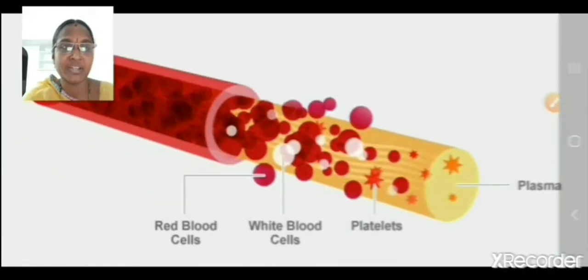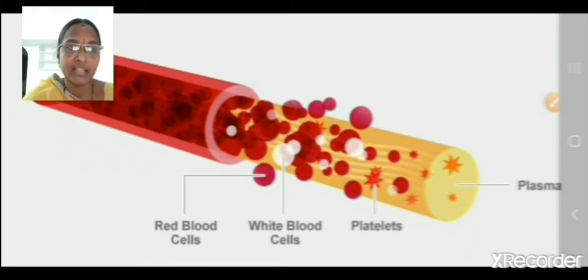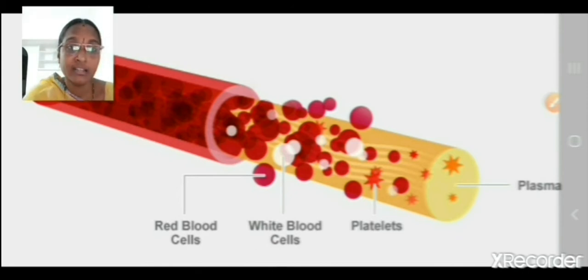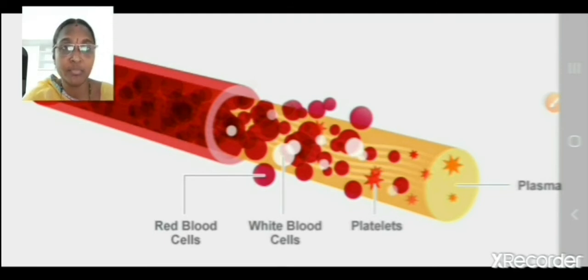The yellow colored plasma is the liquid portion of the blood. Red blood cells, white blood cells, and platelets are the solid part of the blood. Plasma is the liquid portion of the blood, and plasma carries all the nutrients required by your body.